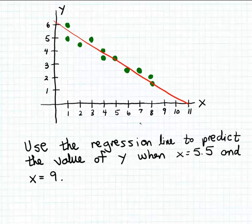So let's start now by predicting the value of y when x is 5.5. This is very straightforward. All we have to do is find 5.5 on the x-axis and then go up until we hit the regression line.